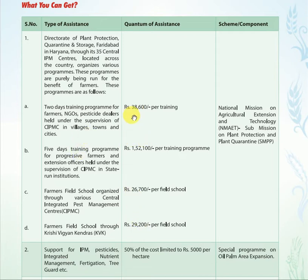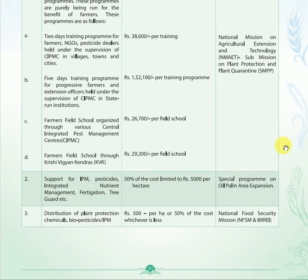To recap: two-day training costs ₹38,600, five-day training costs ₹1,52,100, Farmers Field School through Central Integrated Pest Management is ₹26,700, and under KVK it is ₹29,200 per field school. Important support for Integrated Pest Management, pesticide use, integrated nutrient management, fertigation, and tree guard is 50 percent of the cost, limited to ₹5,000 per hectare.